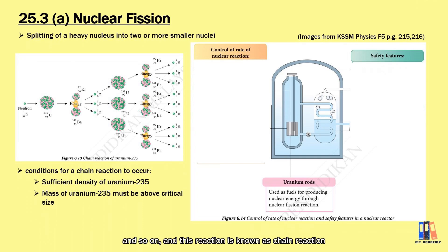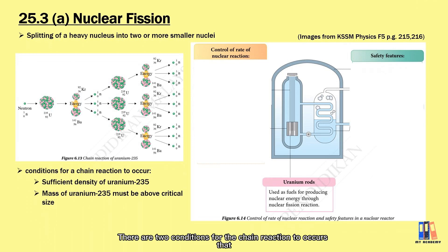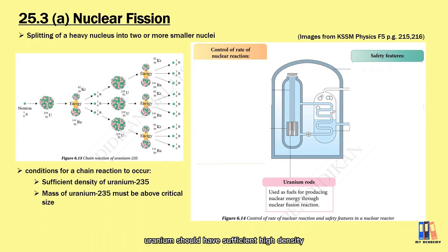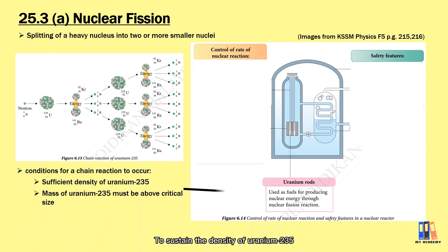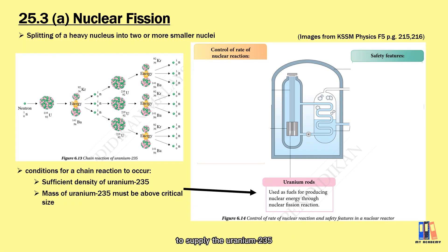Those three neutrons will continue to bombard other uranium nuclei, and this reaction is known as a chain reaction, or continuous nuclear fission. Two conditions for the chain reaction to occur: uranium should have sufficiently high density, and the mass of uranium must be more than a critical size. A uranium rod in the nuclear reactor supplies the uranium-235 to sustain the density.